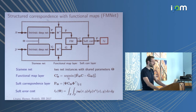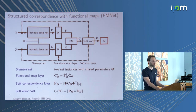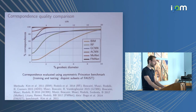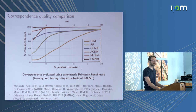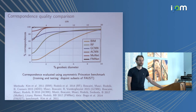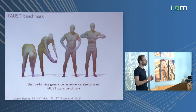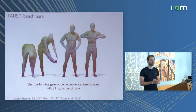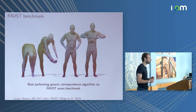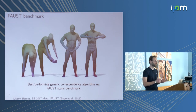The functional map network almost saturates the Faust benchmark — it's probably time to replace it. On raw scans with topological artifacts, connectivity issues, and missing parts, it was the best performing generic algorithm at publication time, slightly outperformed only by Michael Black's algorithm targeted specifically for human shapes. Our method is a generic correspondence algorithm trainable on any data, not necessarily humans.